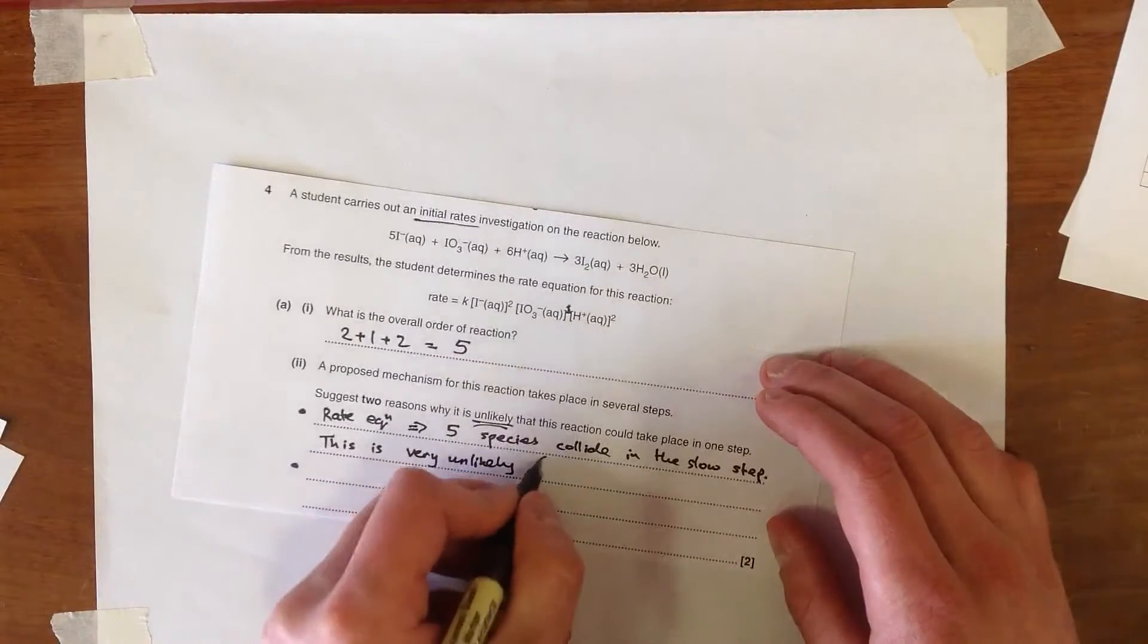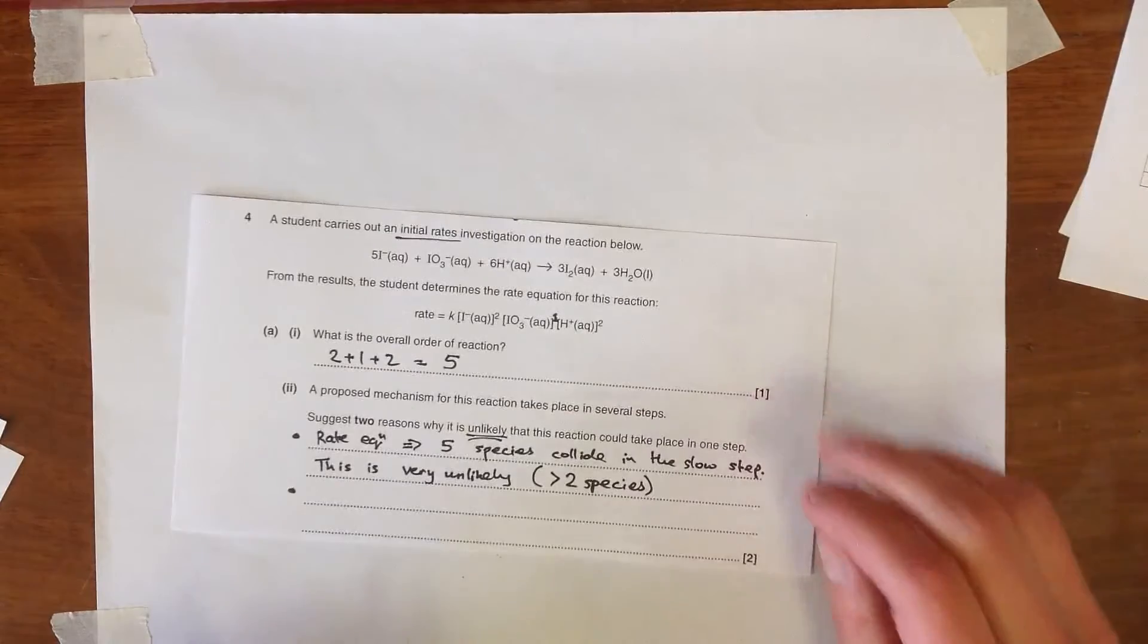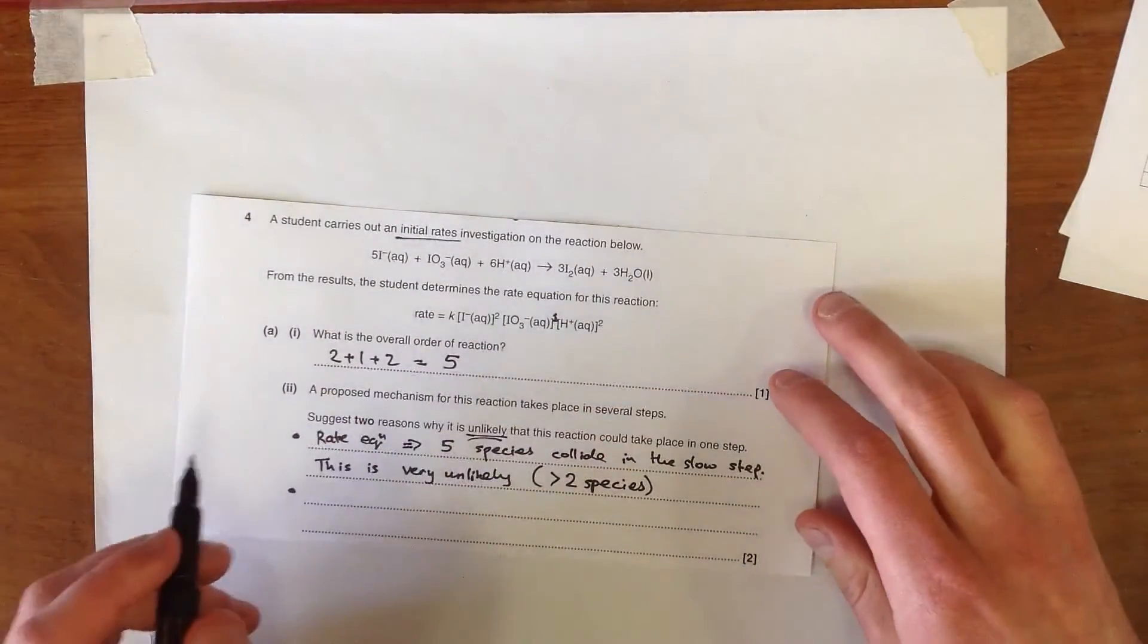Essentially any collision between more than two species is very unlikely. Even a collision between two is relatively unlikely. Collisions between more than two species are very unlikely. And therefore five species here is almost impossible.